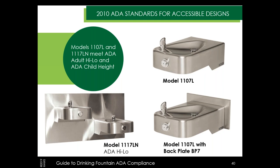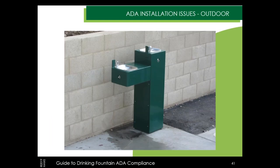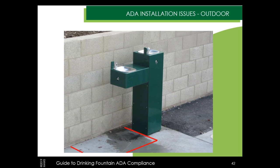Let's look at some outdoor examples. Our 3300 FR is a freeze-protected unit, and in this photo someone has installed it way too close to the wall — the floor space is obstructed. One might be able to pull off a hybrid parallel-forward approach, but we don't want people to have to improvise to get a drink. This needs to be moved away from the wall. If a field inspector or an informed disabled person were to find this, it would mean a tear-out and reinstall, which can be very expensive.